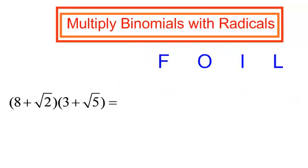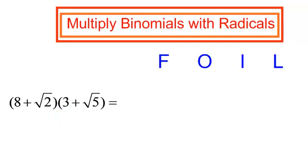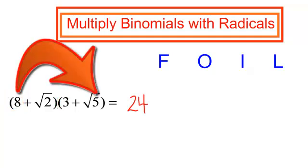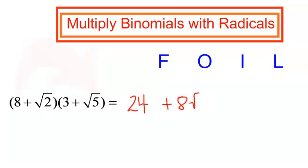Once again, we are multiplying — there is nothing between these parentheses, and I do know that I am multiplying. A binomial times a binomial: I will use FOIL. I have 8 plus radical 2 times 3 plus radical 5. The first terms: 8 times 3 is 24. The outer terms: 8 times radical 5 — they are both positive — that would be a positive 8 radical 5.